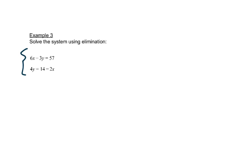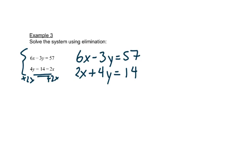Okay, so let's look at this system. First of all, this second equation isn't really in the right form. We want x's and y's to be on the same side. So I'm going to copy my first equation. And I'm going to add 2x to both sides of my second equation. So that I get 2x plus 4y equals 14.